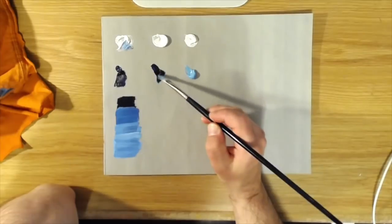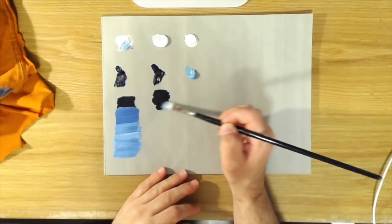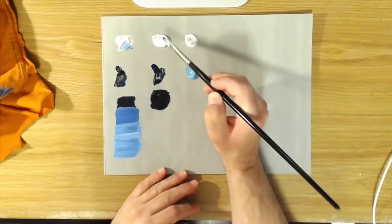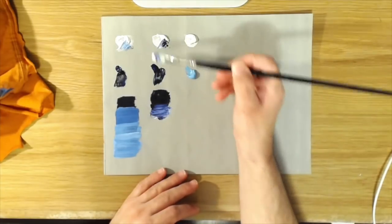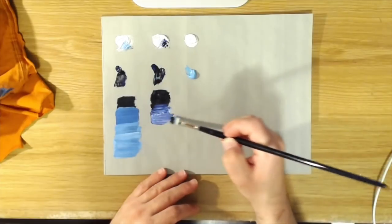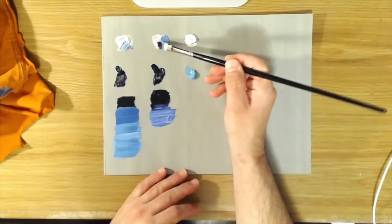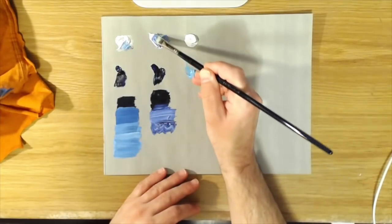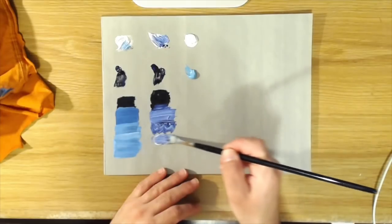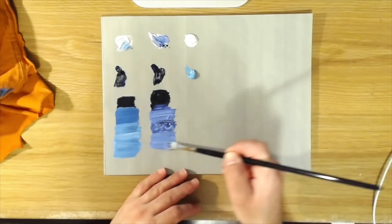So it's good for landscapes because it has kind of a smoky atmospheric color to it. And if you mix it with white you'll see it's kind of like the color of blue jeans. It's a blue that leans a little bit more towards the red side but it's not as intense as ultramarine.